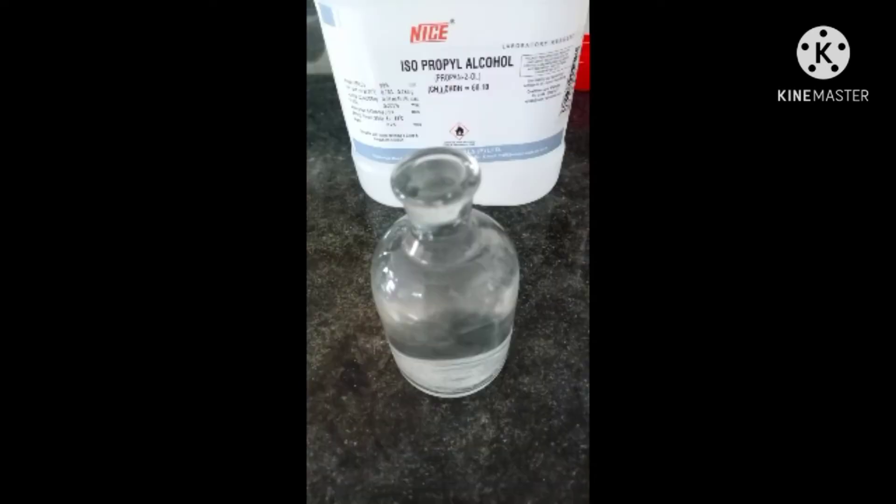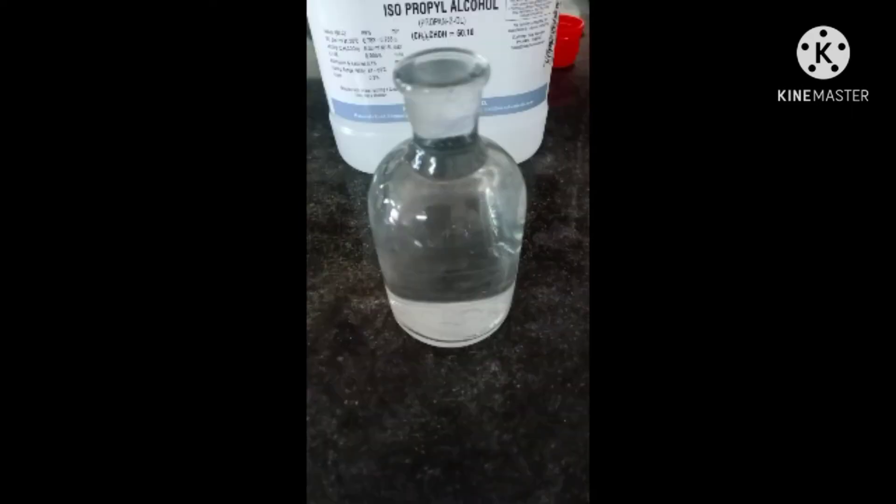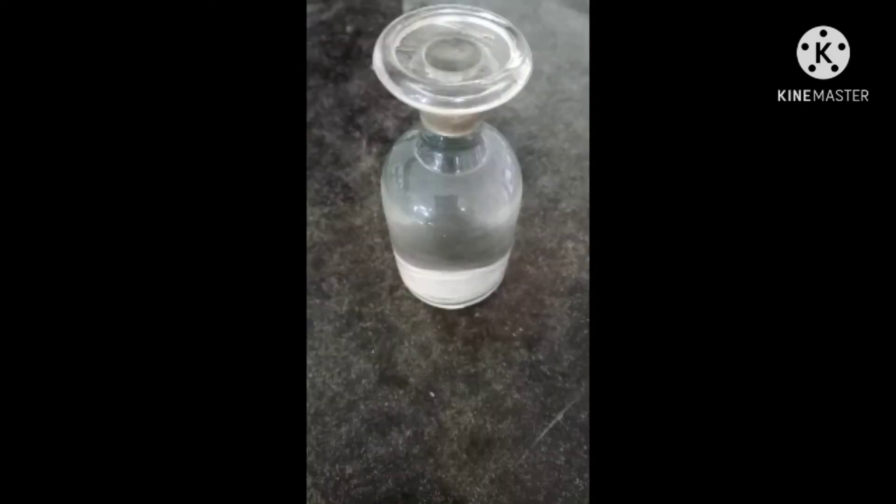Then the bottle is filled with isopropyl alcohol up to the neck. A cork is inserted and the bottle is kept under sunlight to complete the reaction.